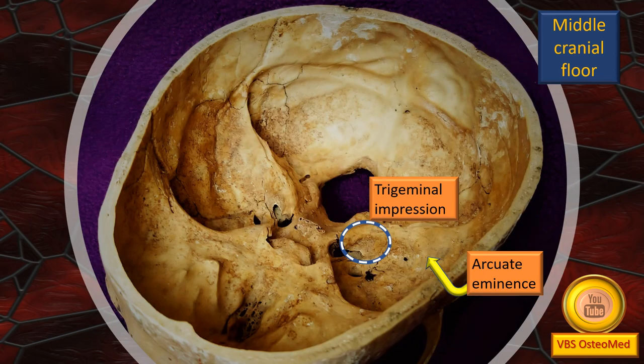This photograph is from another skull, a superior view. Note that lower down is the anterior cranial fossa; the posterior cranial fossa is above and to the right. Shown by the dotted circle is the trigeminal impression, very well seen here. Similarly, the arcuate eminence is also well marked in this particular specimen.